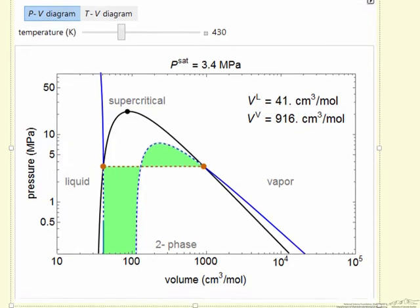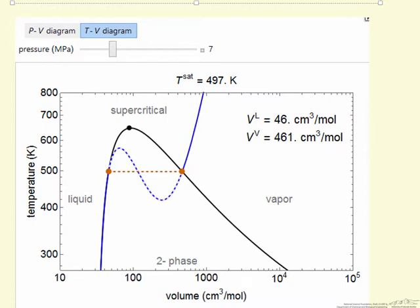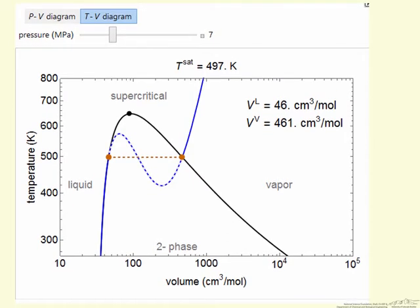And then the corresponding, if I select the temperature-volume diagram, then I show an isobar. So same idea, the blue line.